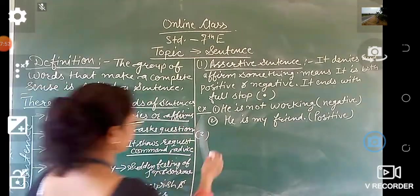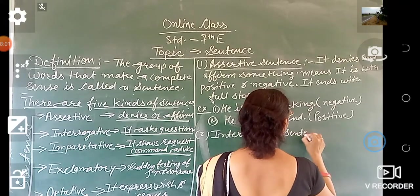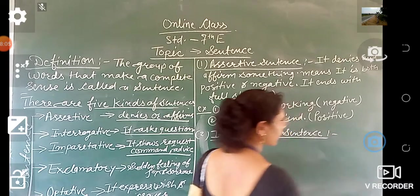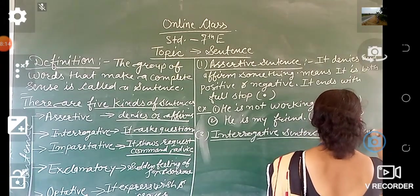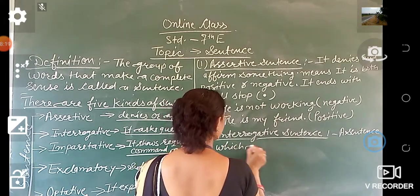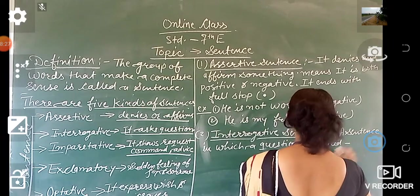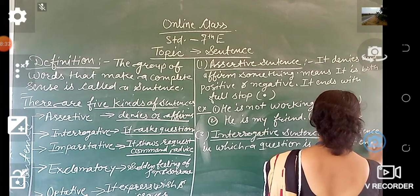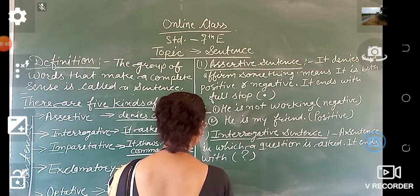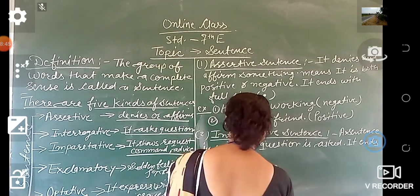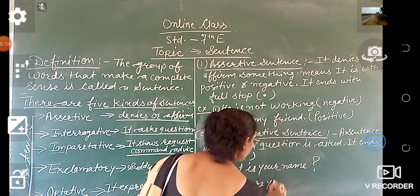The second kind is the interrogative sentence. A sentence in which a question is asked is called an interrogative sentence. For example: 'What is your name?' and 'Where are you going?'